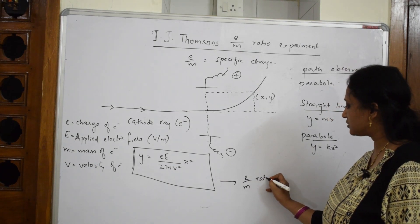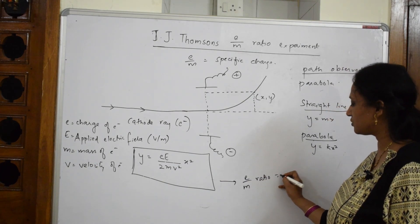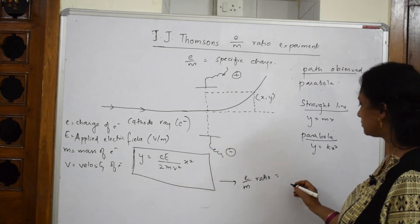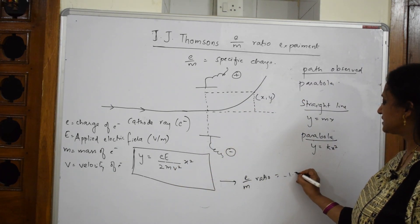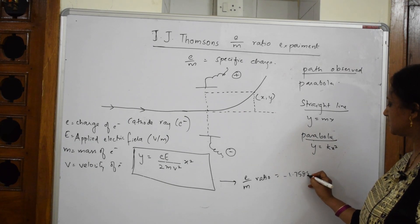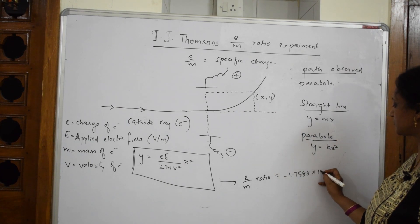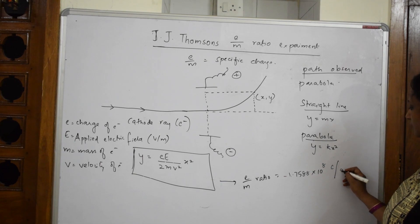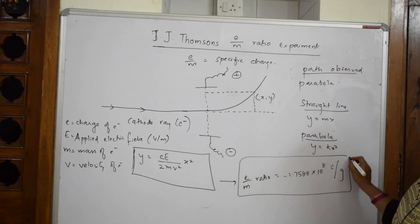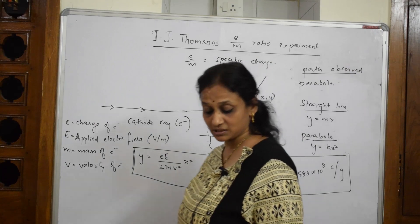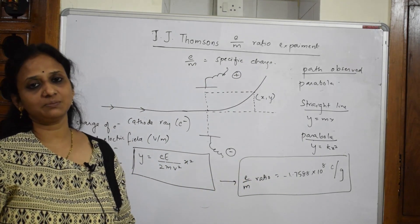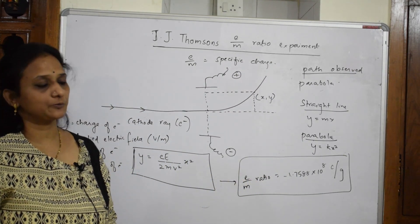The E/M ratio, after substituting the values, was found to be −1.7588 × 10⁸ coulombs per gram. This is your E/M ratio — a very important value. You need to remember this because you will be solving numericals based on E/M ratio.